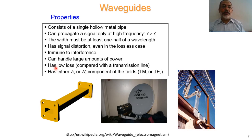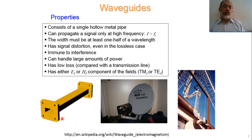Waveguides have low losses. In transmission lines, we have two basic loss mechanisms: conductor loss and dielectric loss. In a hollow waveguide, the dielectric material inside is air, which has very low losses. In addition, we only have the outer conductor, so we only have conductor loss from that single wall — compared to a transmission line which has both inner and outer conductor losses. By using only one conductor and air as the dielectric, waveguides have low losses and can handle large power.